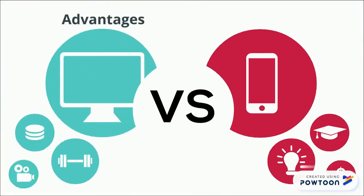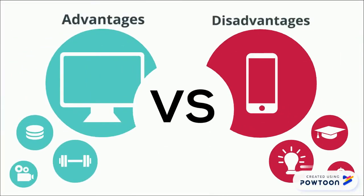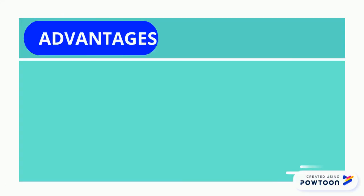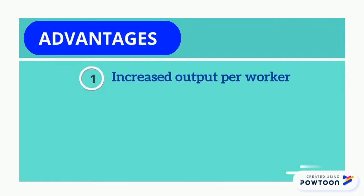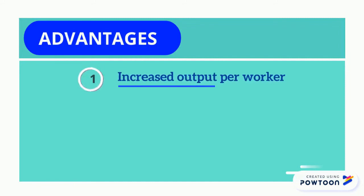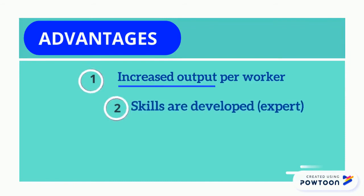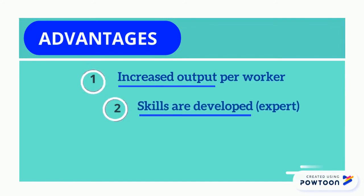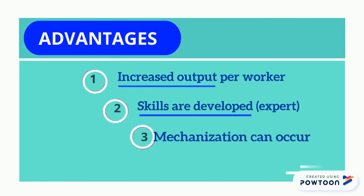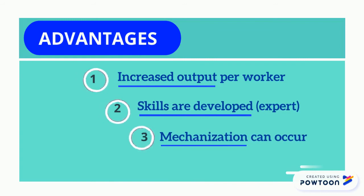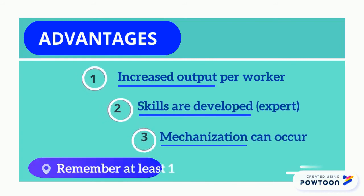Now the advantages versus disadvantages. Our advantages are as follows: one, increased output; two, skills are developed; and three, mechanization. Remember at least one of these.